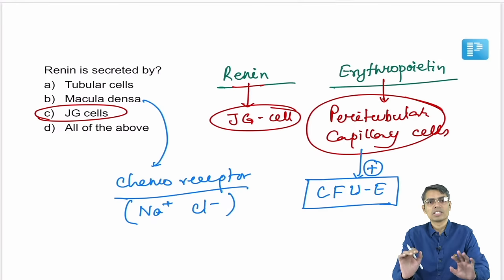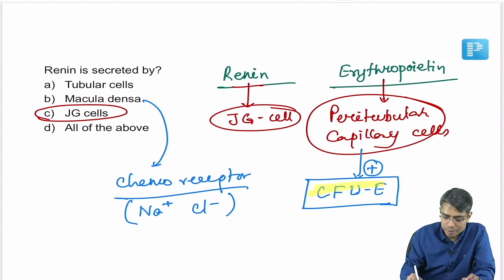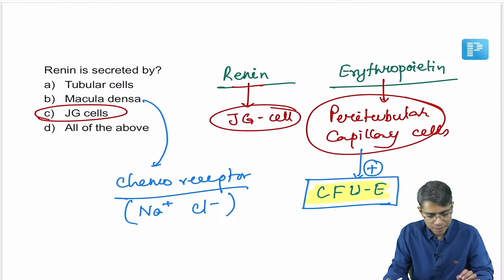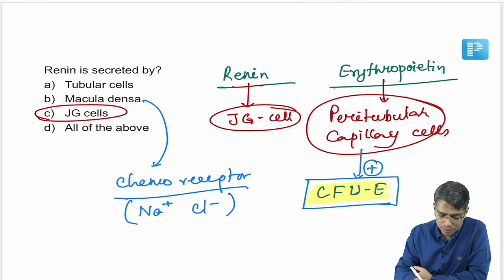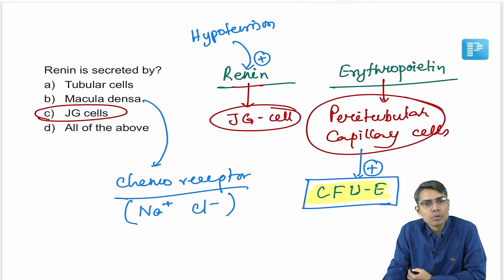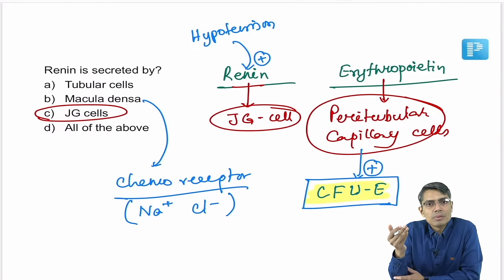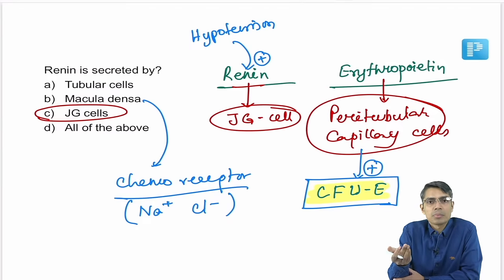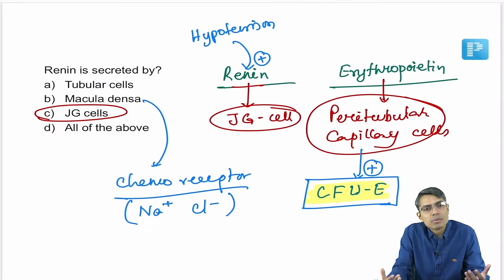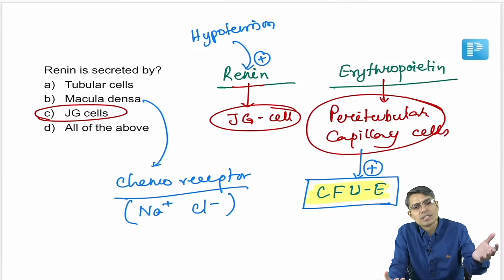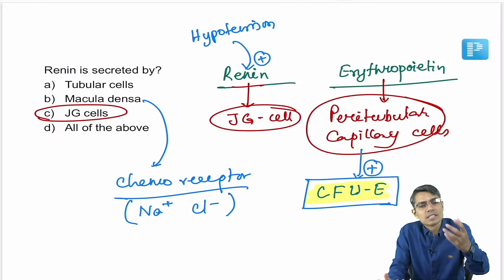Erythropoietin is secreted from peritubular capillary cells of the kidney. It increases RBC production by stimulating colony-forming unit erythroblast. Regarding renin: hypotension is the stimulus for renin secretion. Renin ultimately produces angiotensin 2, which causes vasoconstriction and aldosterone release, both raising blood pressure.